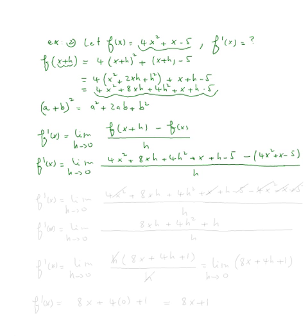As a next step, we need to distribute the negative one — in other words, multiply by negative one. So this is the limit as h approaches zero of four x squared plus eight x h plus four h squared plus x plus h minus five, minus four x squared minus x plus five, all over h.